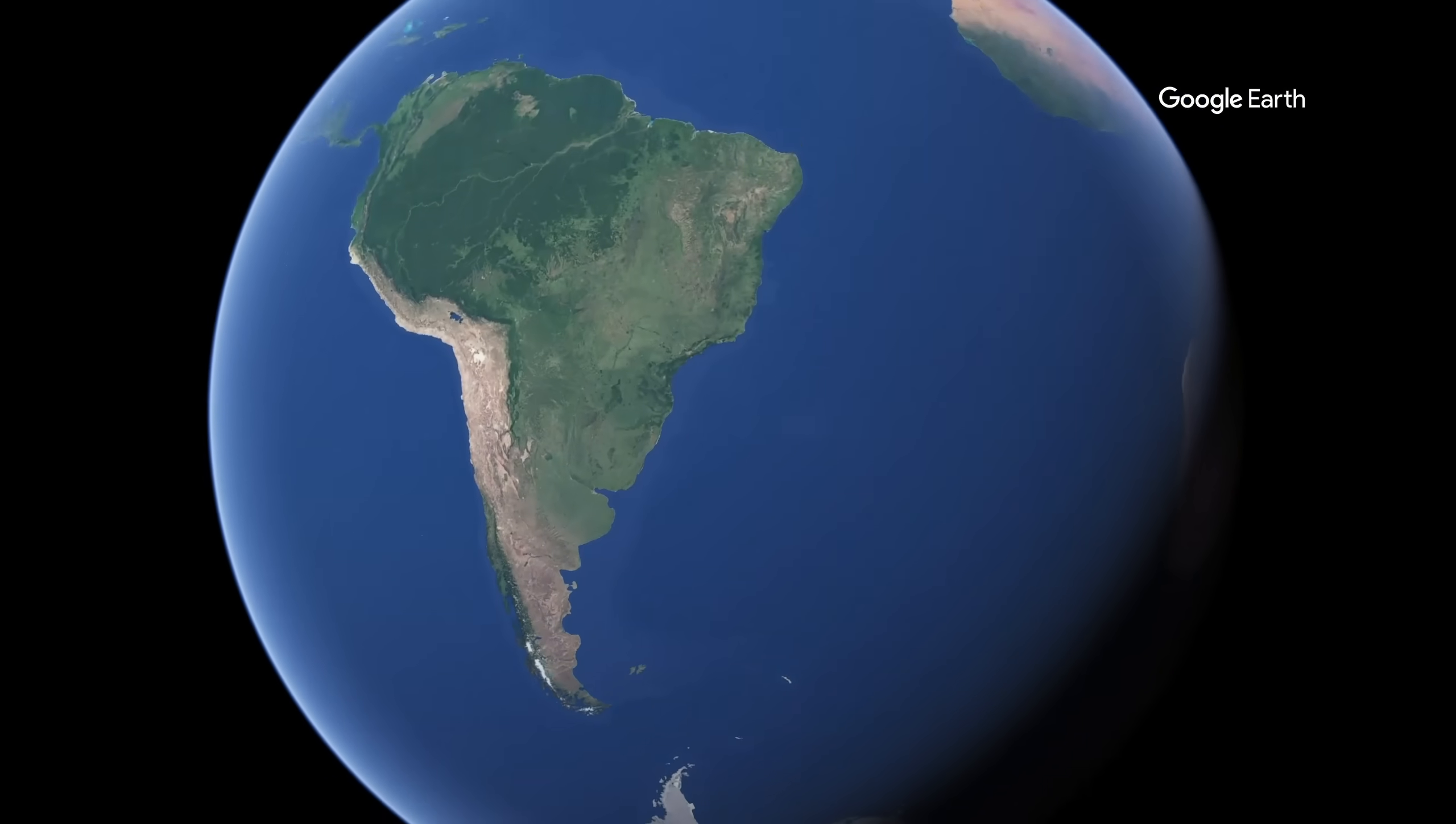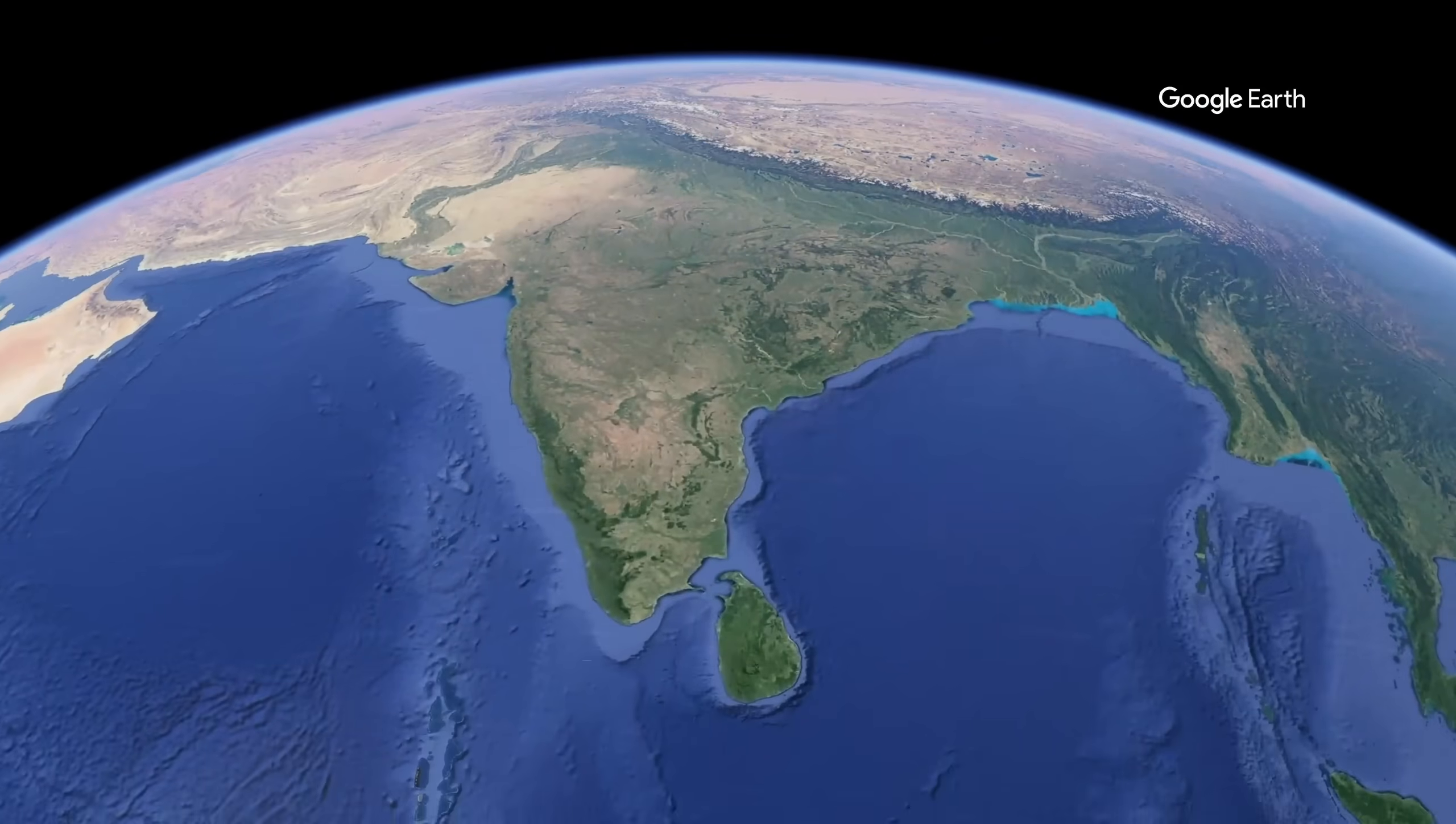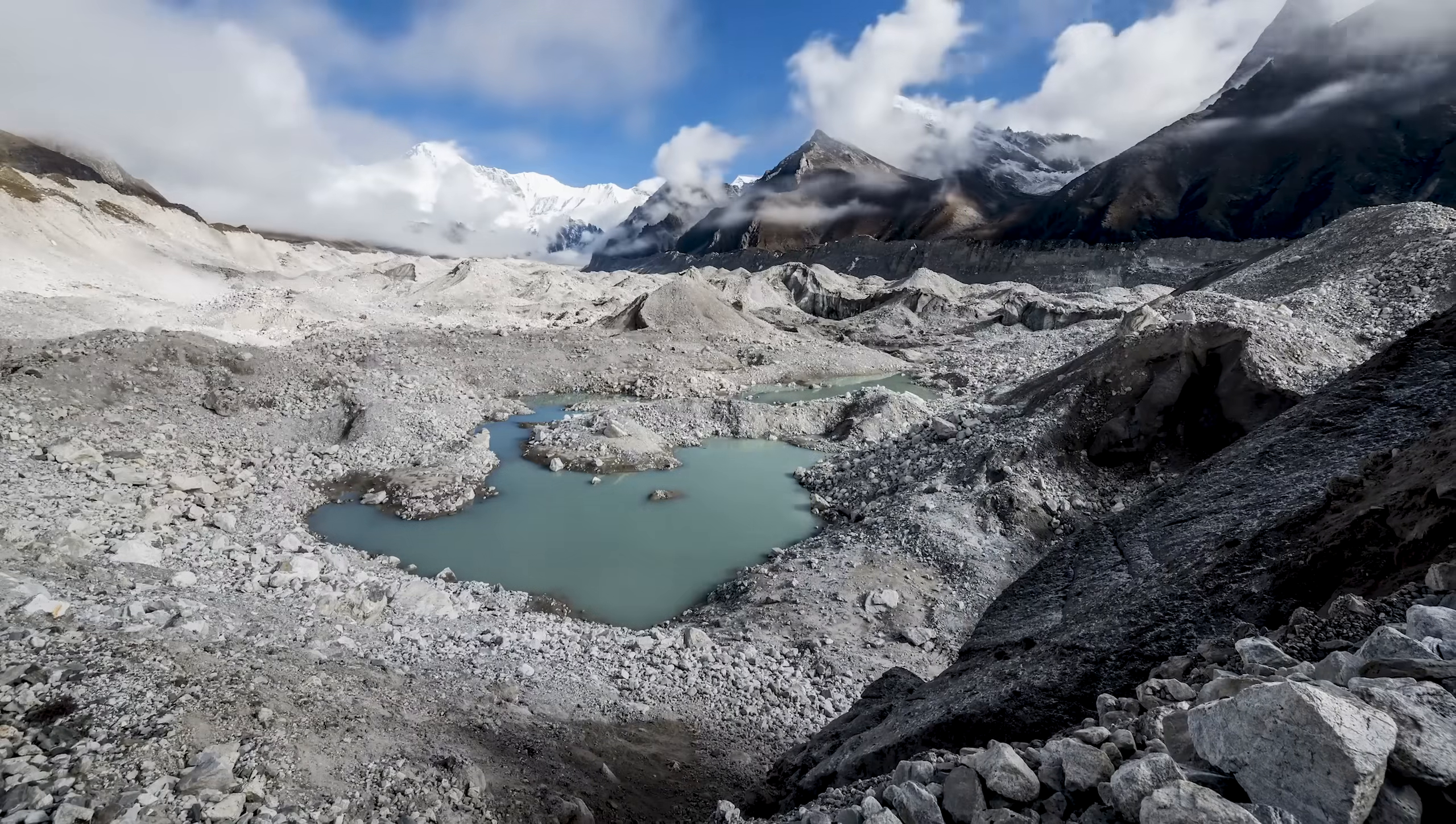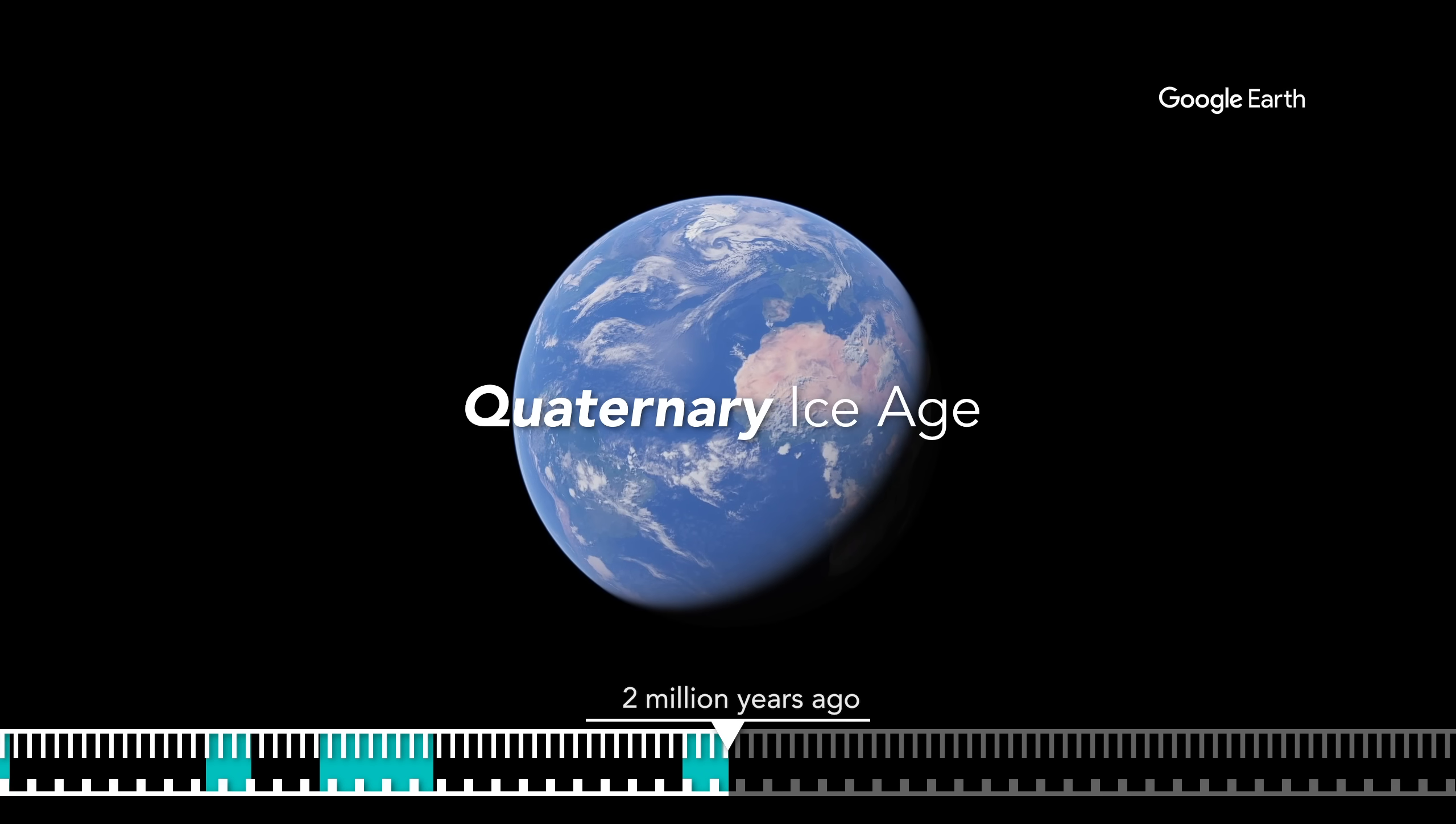But slowly, as the continents continued to break apart, the shoulders of North America and Eurasia closed in around the Arctic Ocean, again blocking those warm equatorial currents from entering the waters here. Meanwhile, the Indian subcontinent was colliding with Asia and as a result was building the Himalayas, or in other words, exposing more rock for the same chemical weathering we talked about earlier, leading to more CO2 leaving the atmosphere and therefore decreasing the world temperatures enough for ice to form at the North Pole, officially marking the start of the Quaternary Ice Age some 2.5 million years ago.